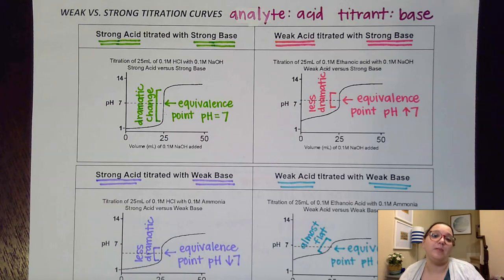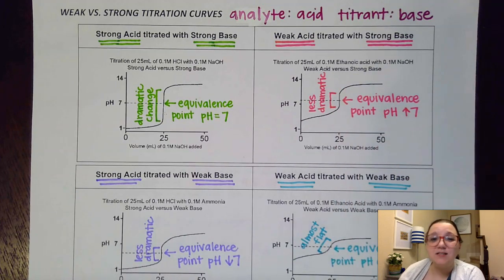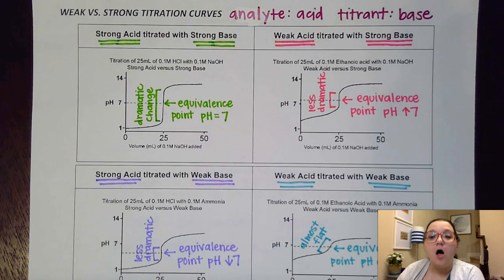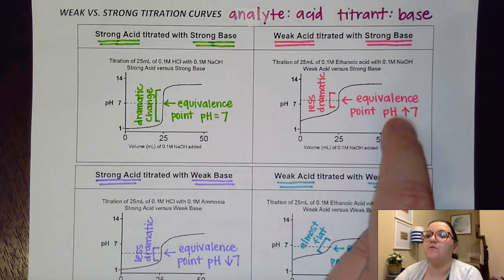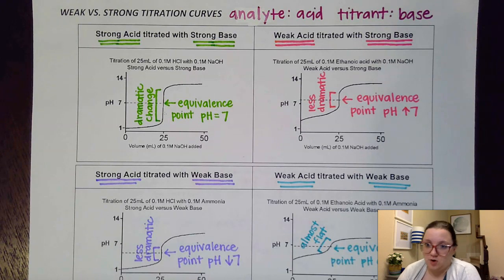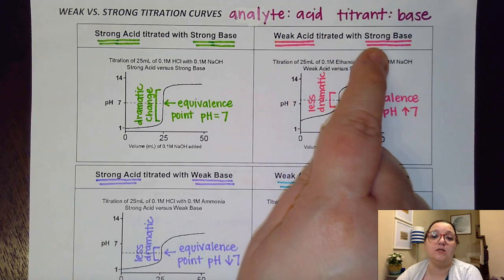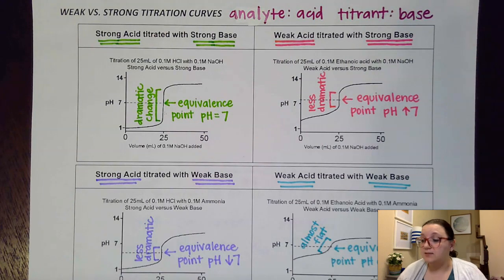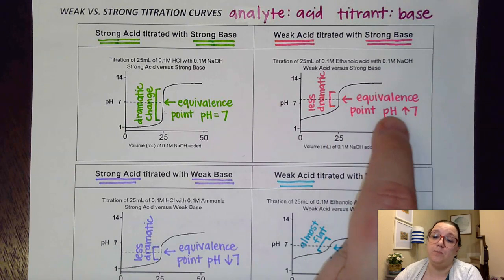Now let's say we take this strong acid and replace it with a weak acid and look at that graph. First off, you notice that around the equivalence point, we get a less dramatic change of our pH level. Also, the equivalence point itself is actually higher than 7. You have to be really careful for the reasoning on this — the reason actually has to do with this weak acid. Even though at equilibrium these two will cancel each other out, you are going to have the conjugate base of the weak acid present, and so because you have the conjugate base present, that gives you a pH slightly higher than 7.